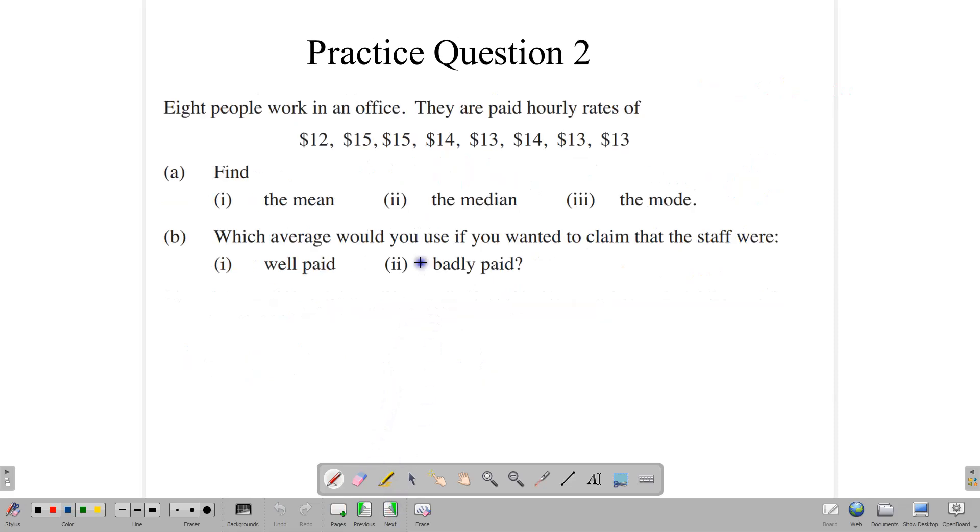Let's look at another one. Here we have eight people working in an office, and they are paid hourly rates as follows: $12, $15, $15, $14, $13, $14, $13, and $13 per hour. And we are to find for this data the mean, the median, and the mode. Now, first again, we're going to put them in order. So I'm going to put them in order right here. 12, that's the lowest one. The other numbers are 13. There are three 13s. So 13, 13, 13, and there are two 14s. And there are two 15s as well.